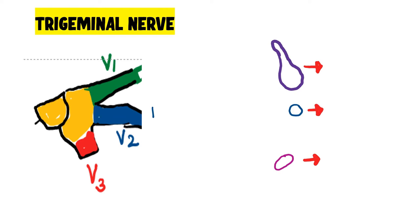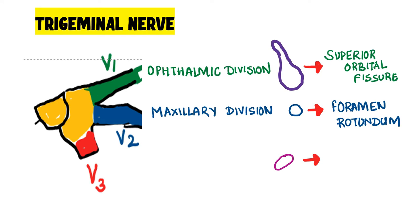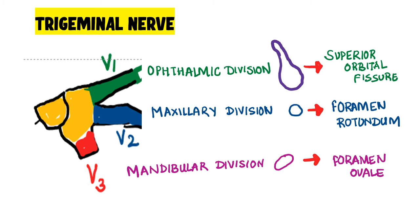To understand the sensory supply, you should know the trigeminal nerve, which is the fifth cranial nerve, and it has three parts. The first division is the ophthalmic division, which enters the orbit through the superior orbital fissure. Then we have V2, the maxillary division, which enters through the foramen rotundum. Then we have the mandibular division, which enters through the foramen ovale.